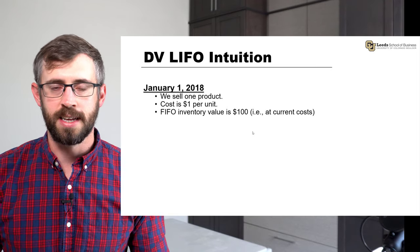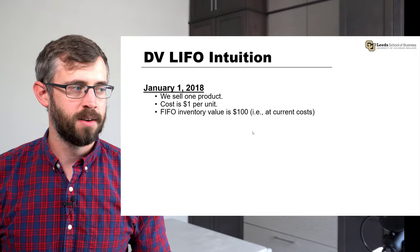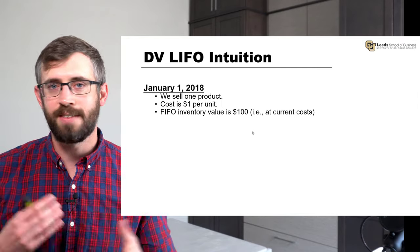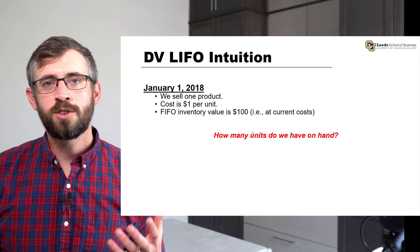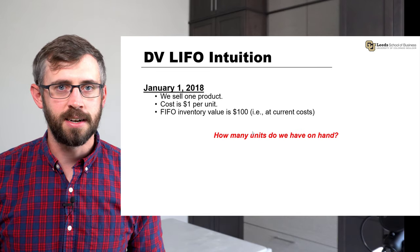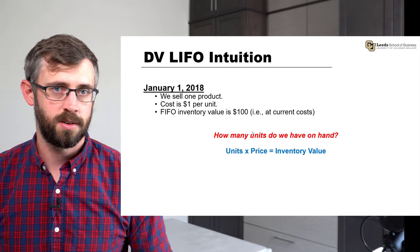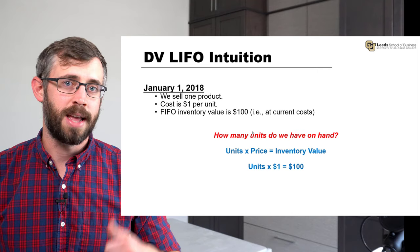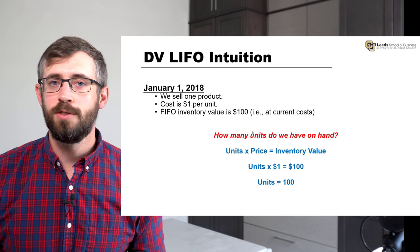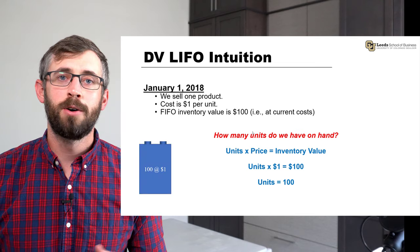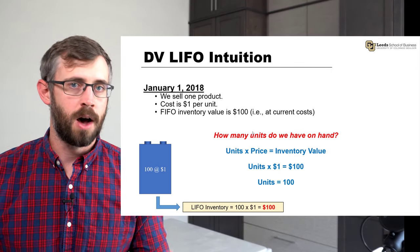Imagine on January 1st, 2018, we are starting Dollar Value LIFO. We have a single product that currently costs us $1 per unit, and our FIFO inventory value is $100. At current costs of $1 per unit, our inventory value is $100. Using the basic inventory formula — number of units times price per unit equals inventory value — we can back into the number of units: 100 units. So we build our first Lego block: 100 units at $1 per unit for a LIFO inventory value of $100.